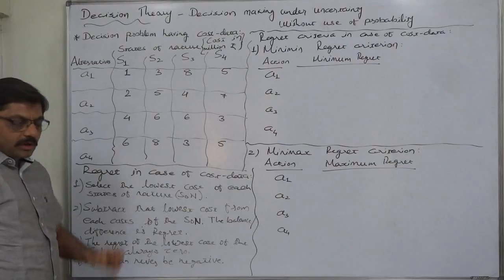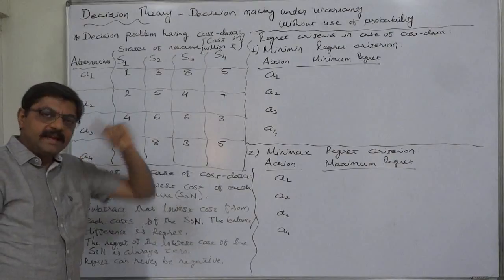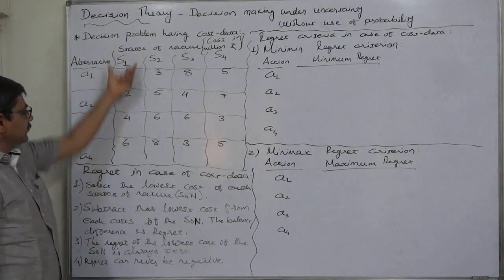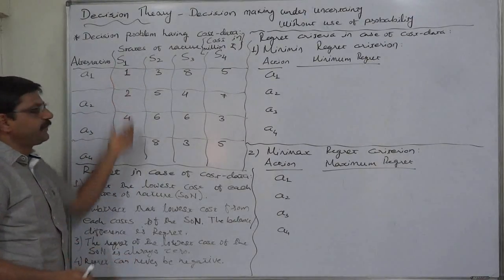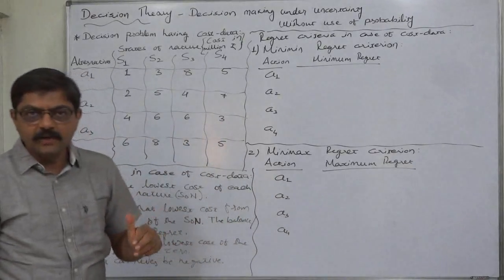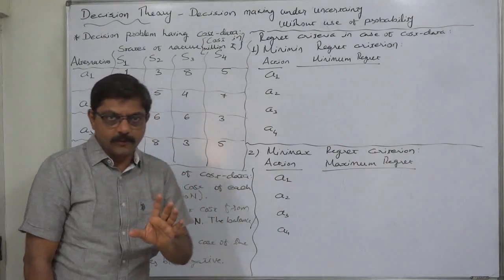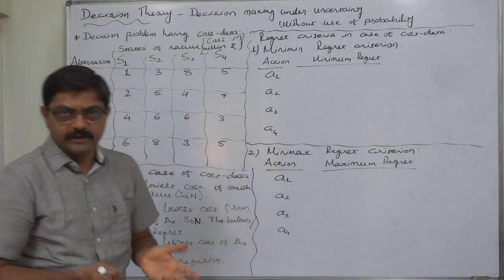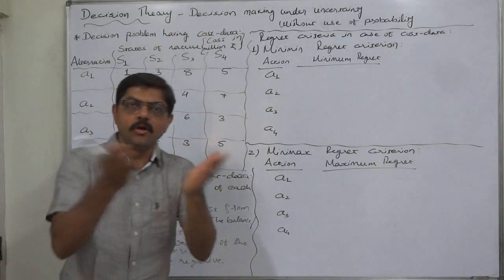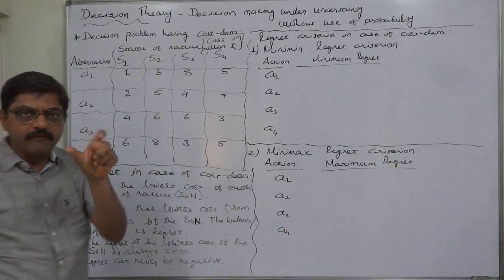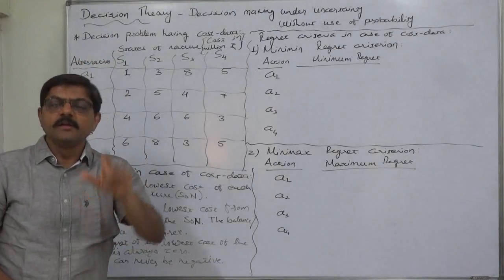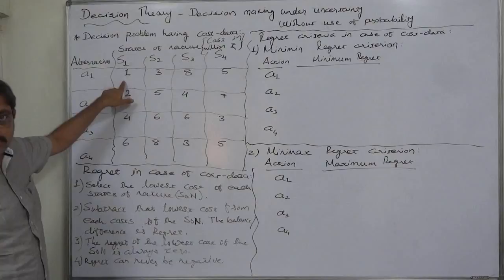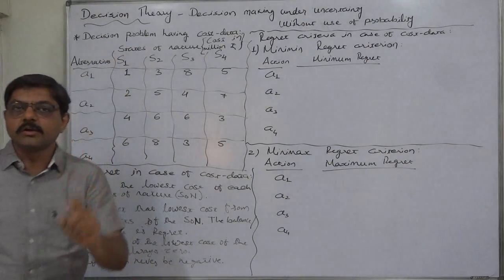The first thing is what exactly regret means in case of cost data. In case of payoff data, regret or opportunity loss means all the payoffs of a state of nature are subtracted from the highest payoff of that state of nature, and the balance is regret, which can never be negative. In case of cost data, cost is exactly opposite to payoff — payoff means gain or profit — so the regret for a cost is also exactly opposite. Instead of subtracting from the highest, the least cost of the state of nature is subtracted from all the costs of that state of nature.